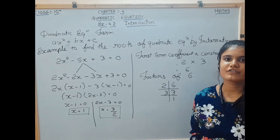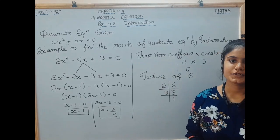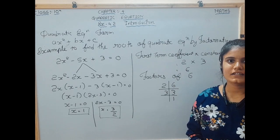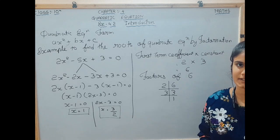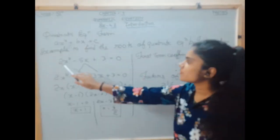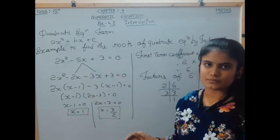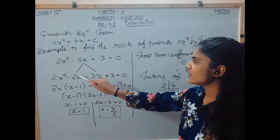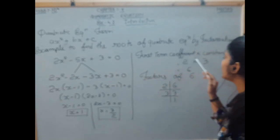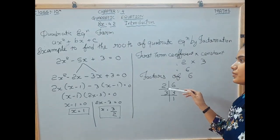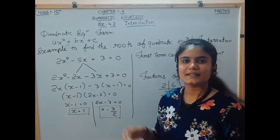Hello guys, welcome to my channel. Today we are going to study exercise 4.2, but before that we will study the introduction. We have to find the roots of x, meaning the value of x, of a quadratic equation using the factorization method. We have to split the middle term into two terms, and the split terms should multiply to give the product of the first coefficient and the constant.